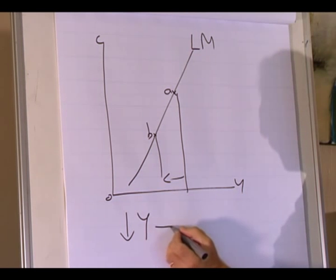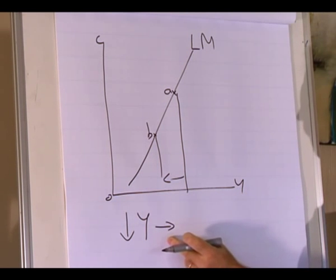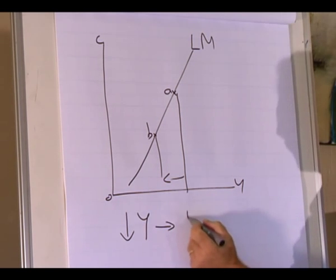This lower level of production led to lower demand for goods and services, therefore the demand for money also decreased.